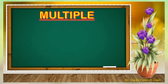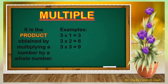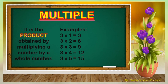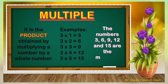Multiple — it is the product obtained by multiplying a number by a whole number. Example: 3 times 1 equals 3, 3 times 2 equals 6, 3 times 3 equals 9, 3 times 4 equals 12, 3 times 5 equals 15. The numbers 3, 6, 9, 12, and 15 are the multiples of 3.